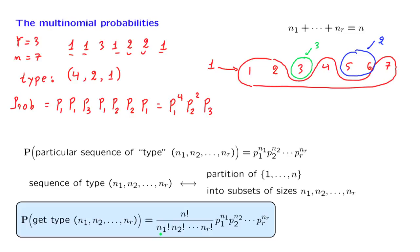This formula generalizes the one we saw for two colors, which corresponded to the coin-tossing setting. It is a useful model because you can think of many situations in which you have repeated trials, and at each trial you obtain one out of a finite set of r possible results. You repeat those trials independently and may be interested in how many results of the first kind, the second kind, and so on, there will be.